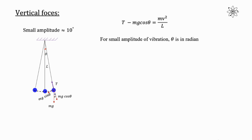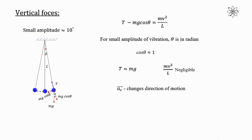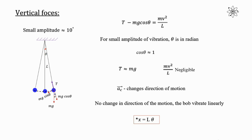For a small amplitude of vibration, theta is measured in radians so that cos theta is approximately equal to 1. Substituting this value in the above equation, we have T approximately equal to mg. Since T is approximately equal to mg, we have negligible centripetal force. This centripetal force is responsible for changing the direction of motion, so with negligible centripetal force there is no change in direction, and hence the bob vibrates linearly. For such linear motion we can write x equals l times theta, where x is the linear displacement.